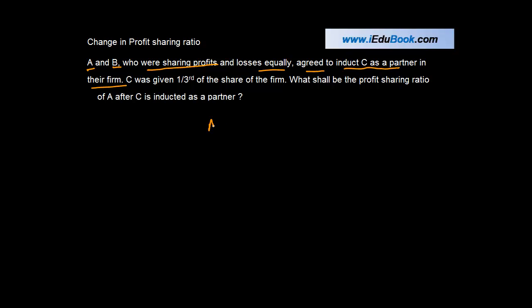So what happened is there were two partners A and B, and they were sharing profits and losses equally. If they were sharing profits and losses equally, that means half of the profits were for A, half of the profits were for B.